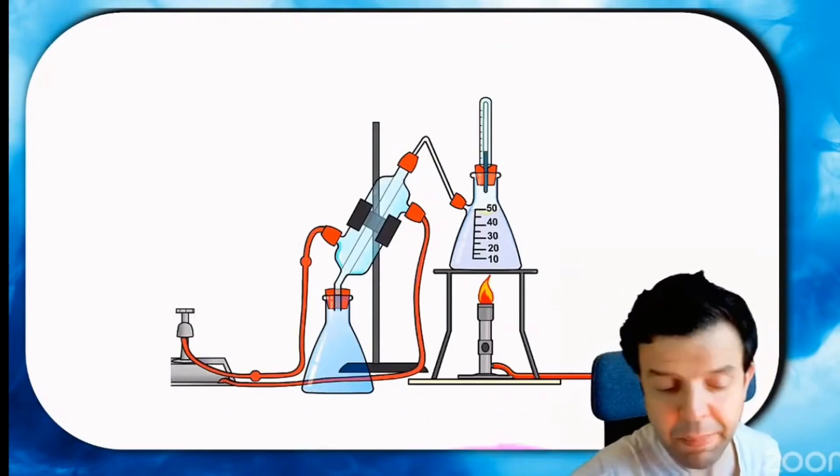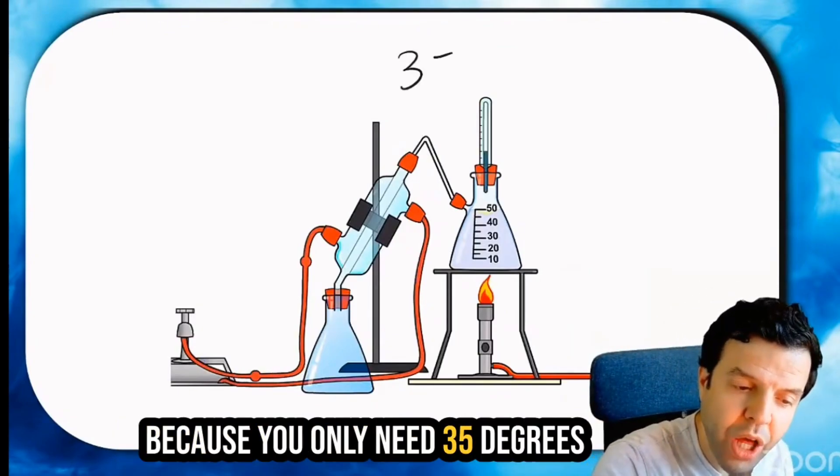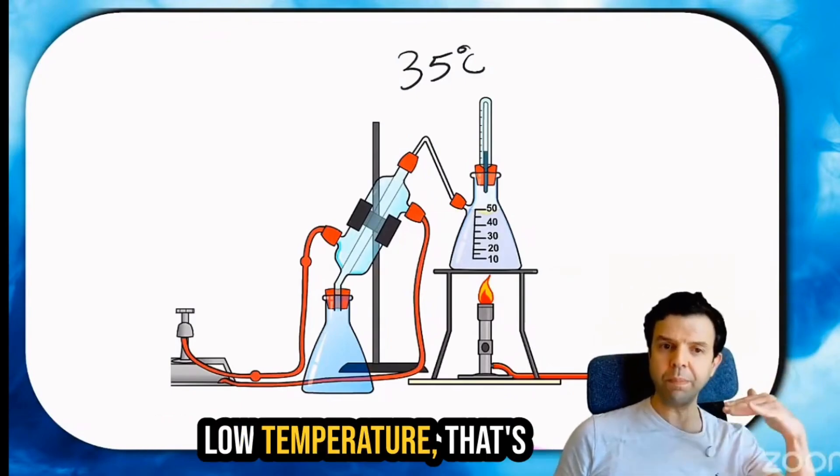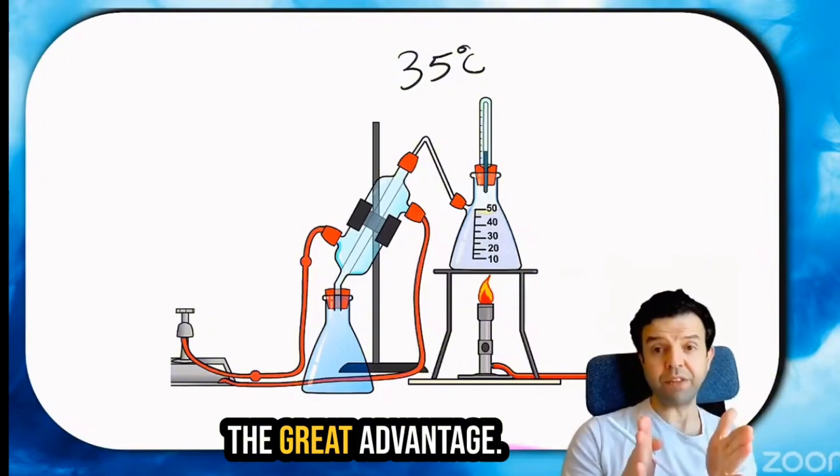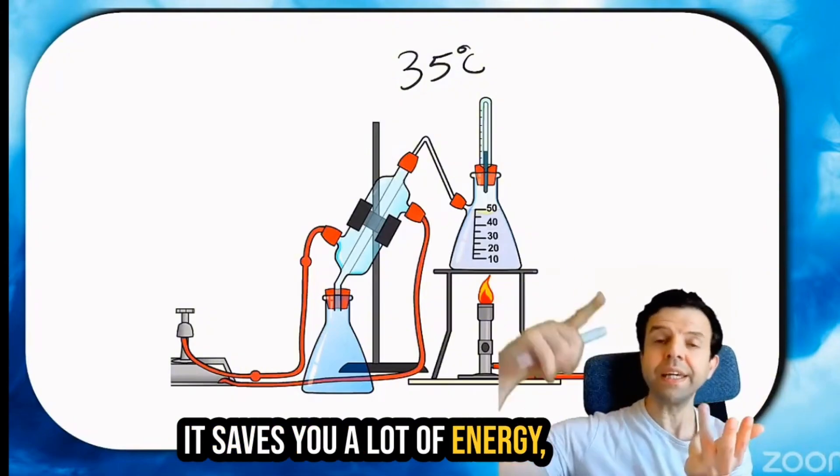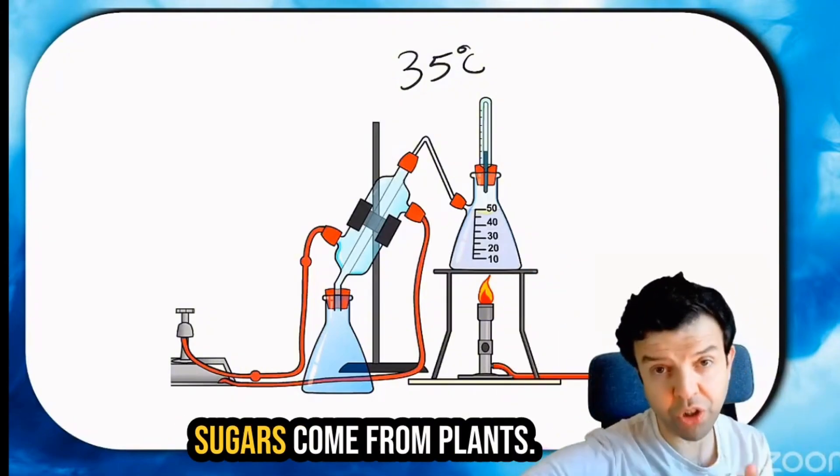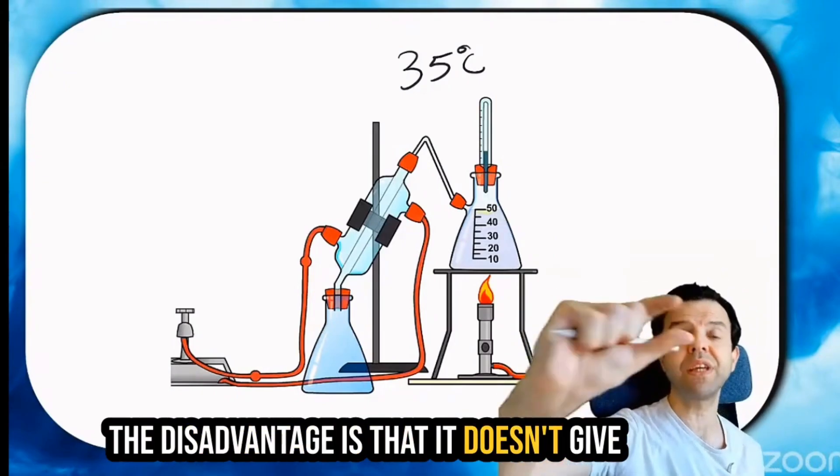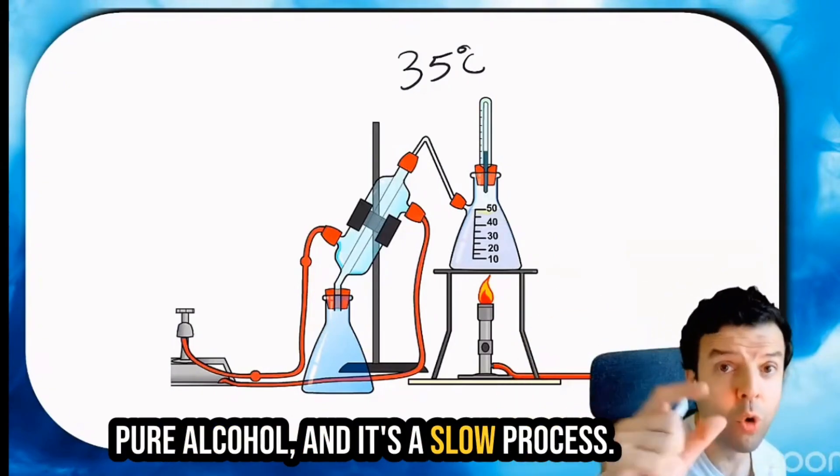Now this method is good. You only need 35 degrees Celsius. Nothing else. Low temperature. That's a great advantage. It saves you a lot of energy. It's renewable because sugars come from plants. The disadvantage is that it doesn't give you pure alcohol. And it's a slow process.